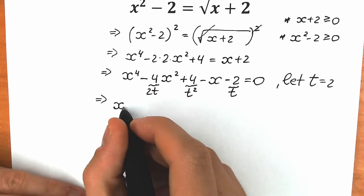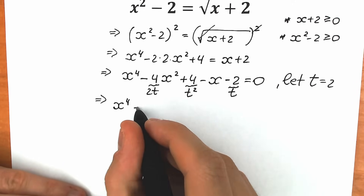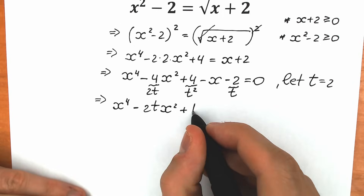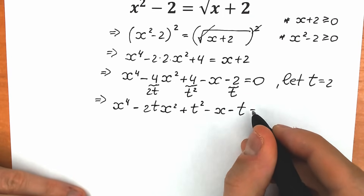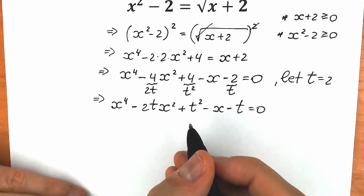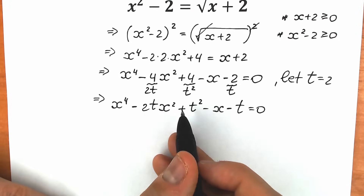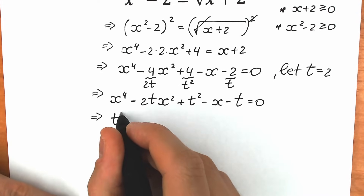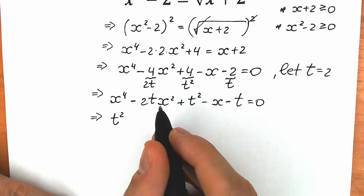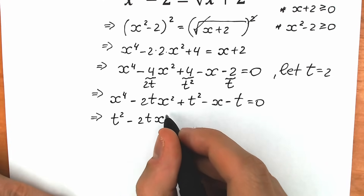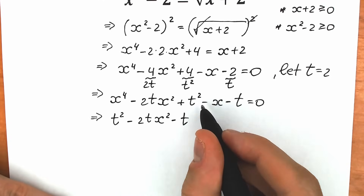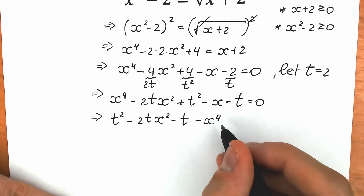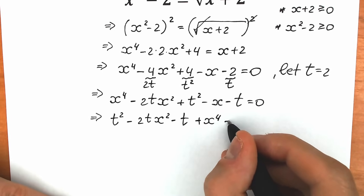After substitution, our expression becomes: x to the fourth power minus 2tx squared minus 2tx squared plus t squared plus t squared minus x minus t minus t, all equal to zero. Let's reorder in terms of t. We put t squared first, then the terms with t to the first power, then the remaining terms: t squared minus (2x squared + 1)·t plus (x to the fourth power minus x), all equal to zero.